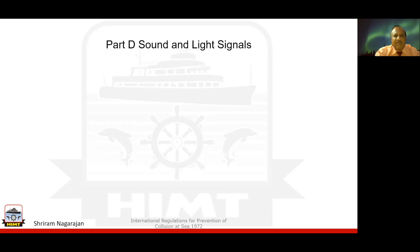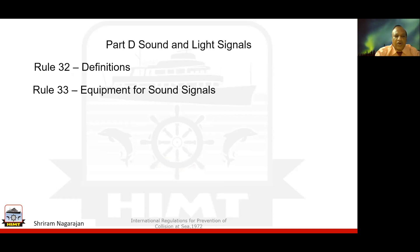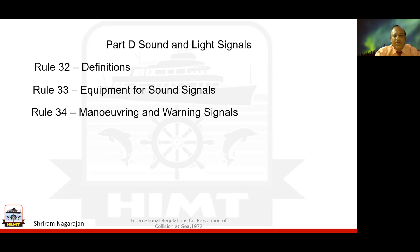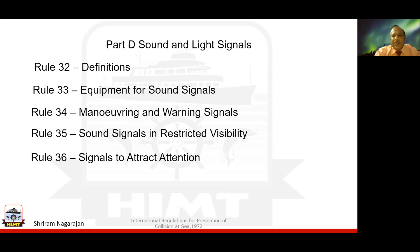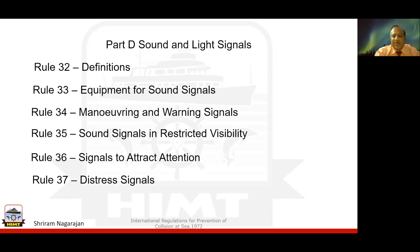Part D is next, talking about sound and light signals. Rule 32 provides definitions. Rule 33 covers equipment available for sound signals on vessels. Rule 34 addresses maneuvering and warning signals in various circumstances. Rule 35 covers sound signals in restricted visibility. Rule 36 covers signals to attract attention of other vessels, and rule 37 guides on distress signals to be displayed or sounded when out at sea.